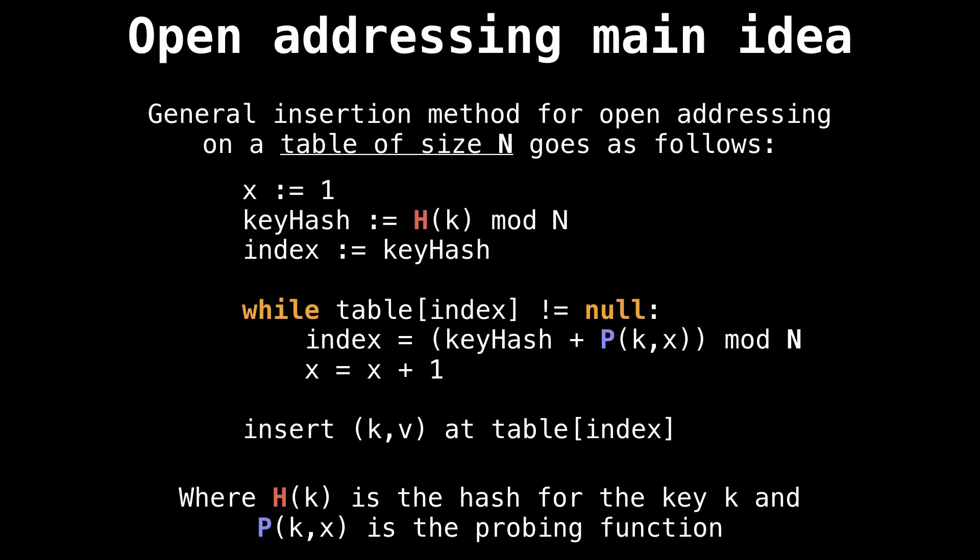Let's recall how we insert key value pairs into a table of size N using the open addressing collision resolution schema. First we initialize a variable called x to be one, which we're going to increment every time we're unable to find a free slot.